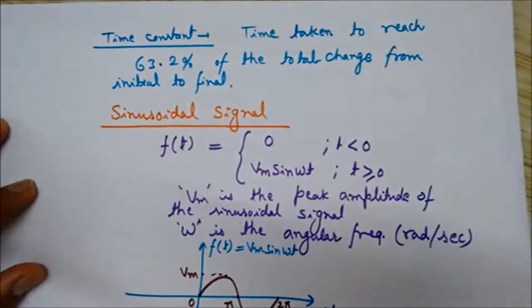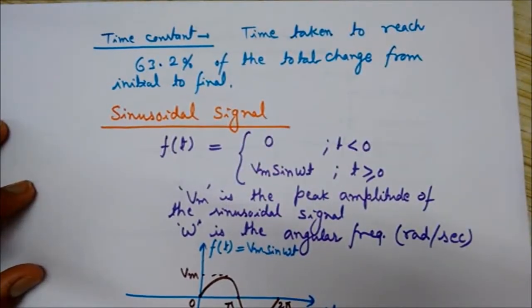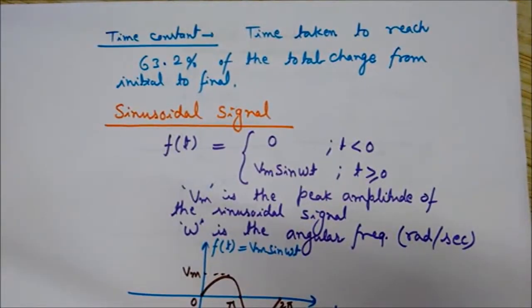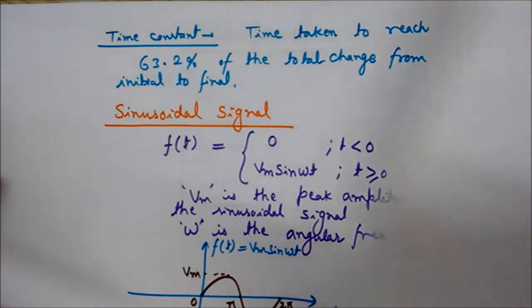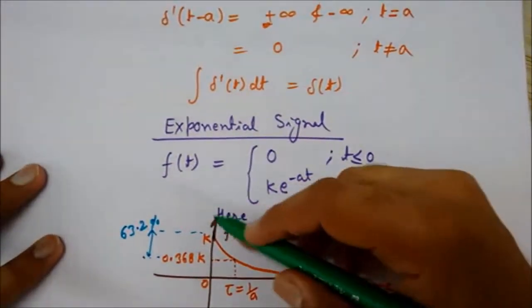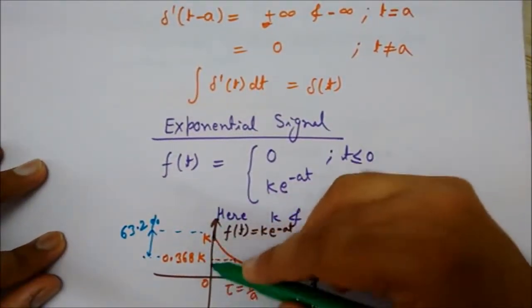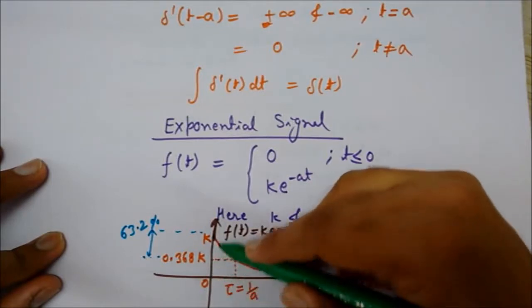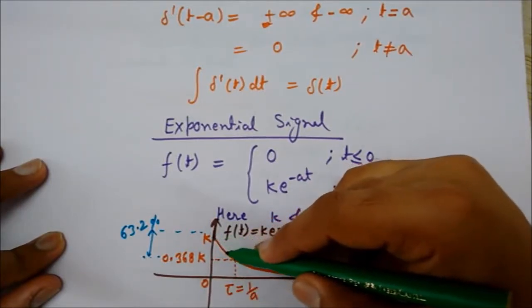What does this mean, reaching 63.2 percent of the total change from initial to final? Look at this. This is the initial stage at time zero, decreasing with time, so when it